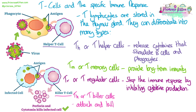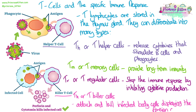T killer, or TK cells, attack and kill body cells that are infected and are displaying the foreign antigen on their cell membranes. Infected cells display antigens from the pathogen on their cell membrane, and the T killer cells release toxins such as perforin, which disrupts or breaks the cell membrane and therefore destroys the cell.